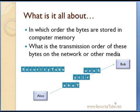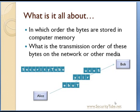In computer programming, and especially network programming, you are going to come across endianness again and again. For a fresher programmer, 80% of the problems or 80% of the troubleshooting will keep rolling around endianness — converting network byte order to host byte order and vice versa. So what is endianness all about? It's simply the byte ordering, or how exactly bytes are stored in computer memory and how these bytes are transmitted over networking media.